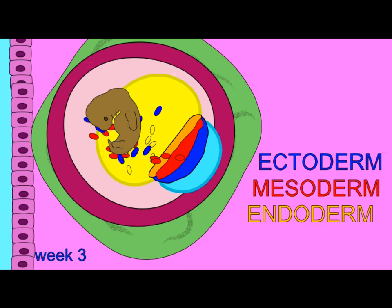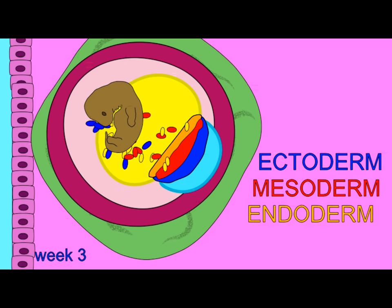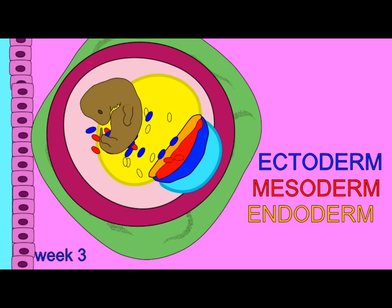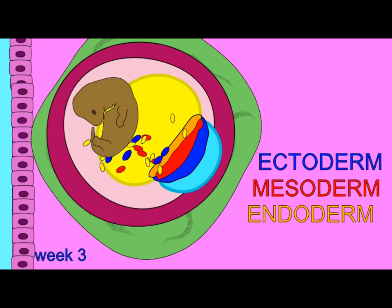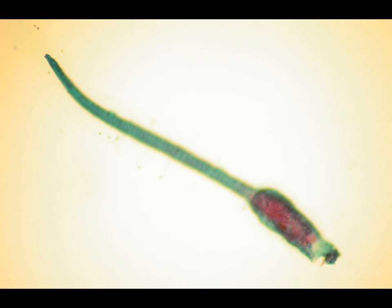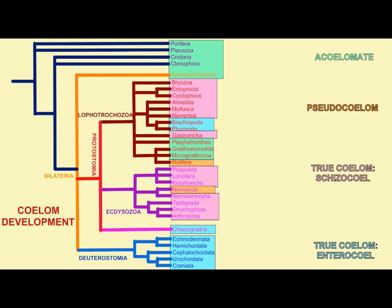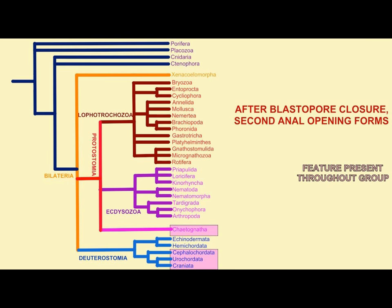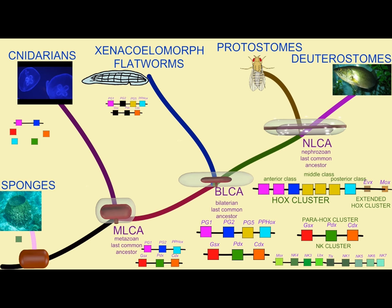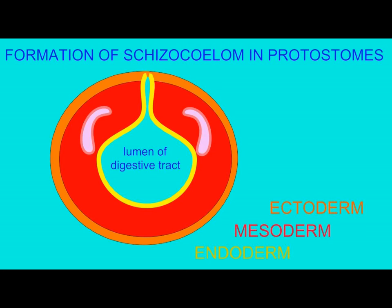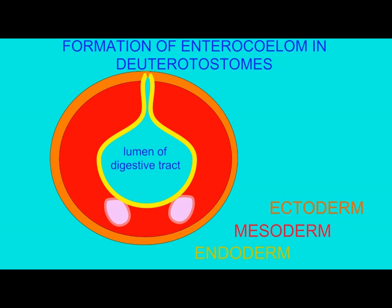In addition, a deuterostome trait often cited is that embryonic cells determine their fate later, but there are some tunicates where that is not true. In other words, while deuterostomes and protostomes seem to be strong groupings of the bilaterians that molecular sequencing upholds, morphological traits derived from embryological development typically used to define these groups are not perfect, and there are exceptions to each of these.